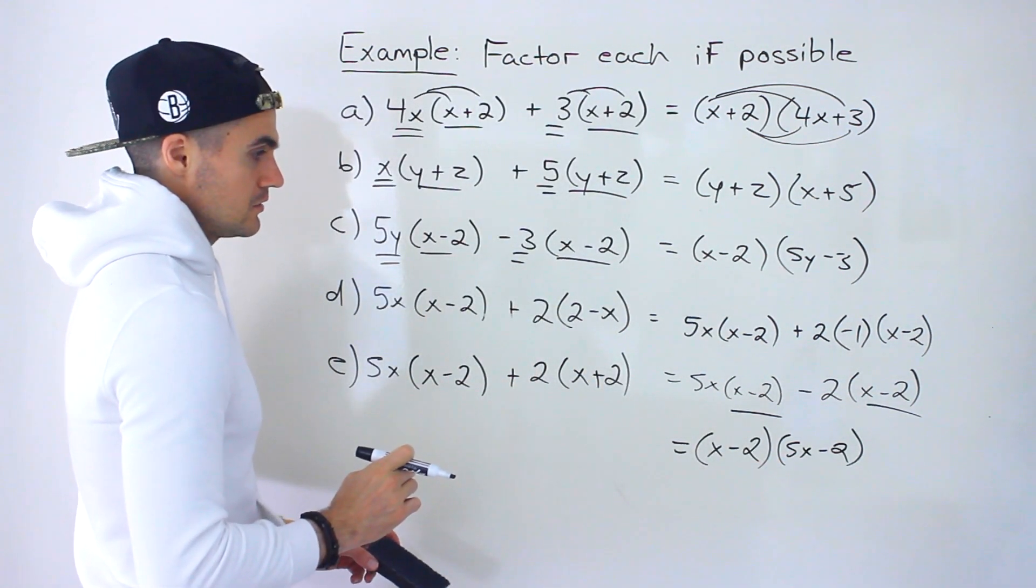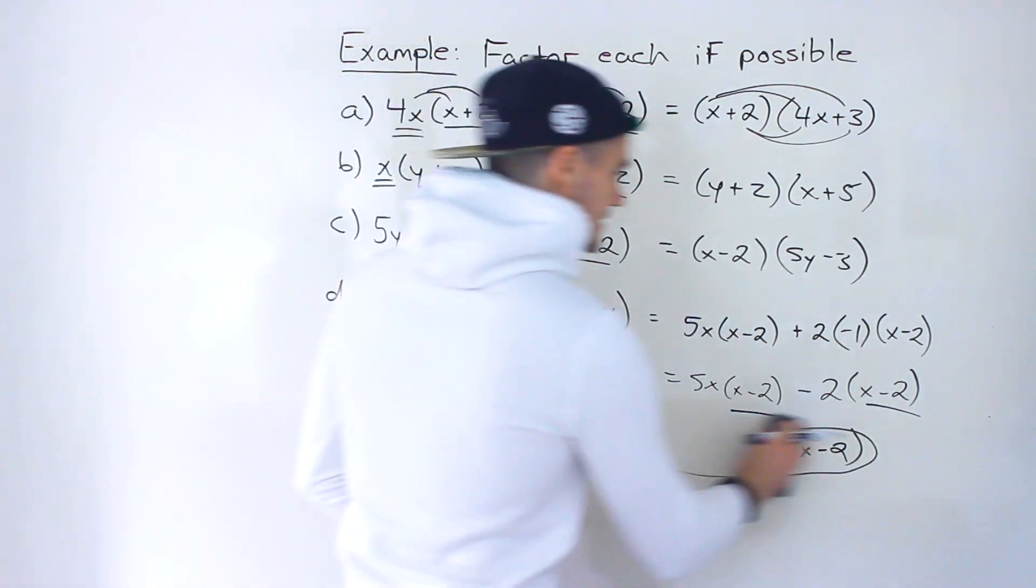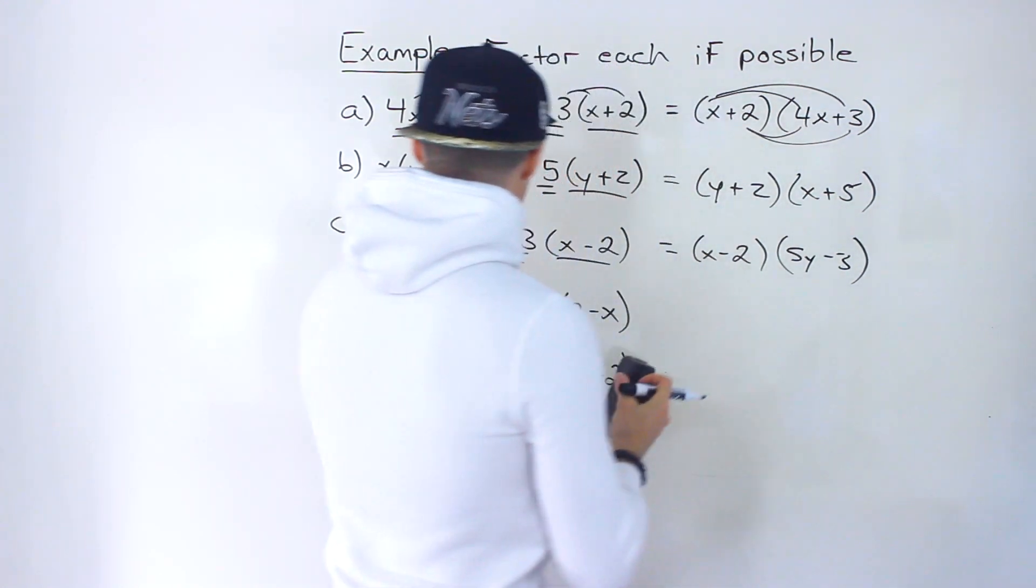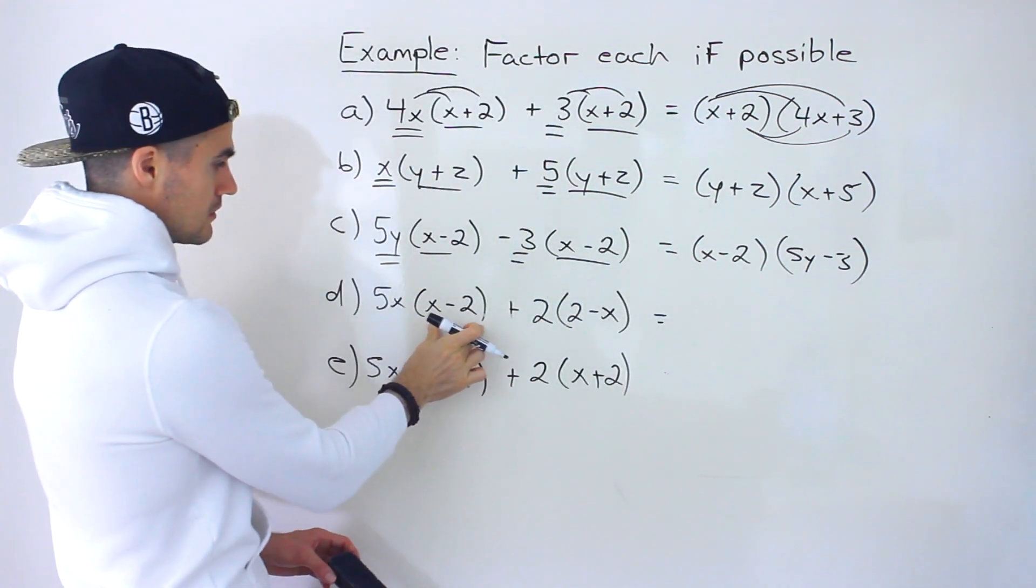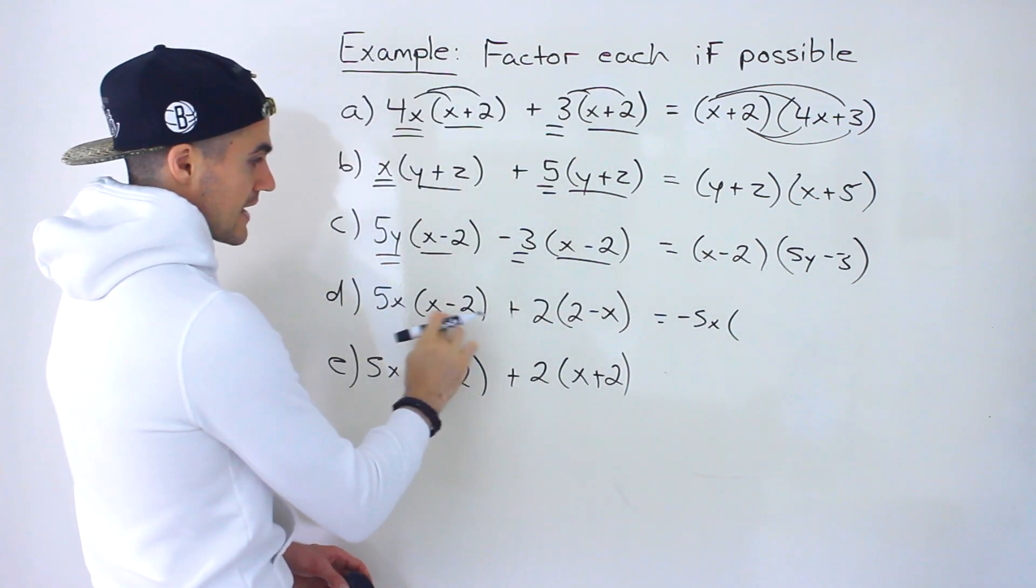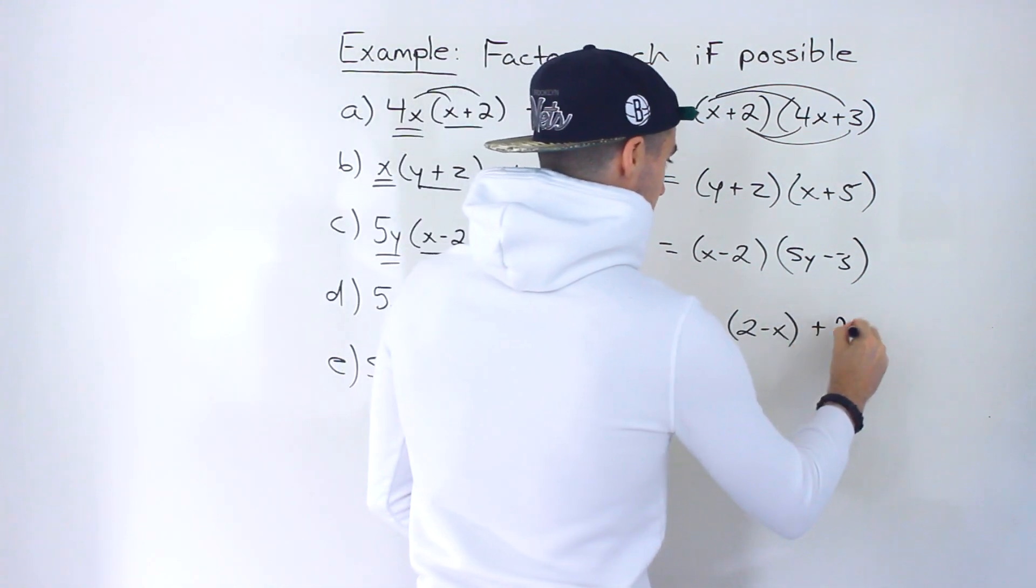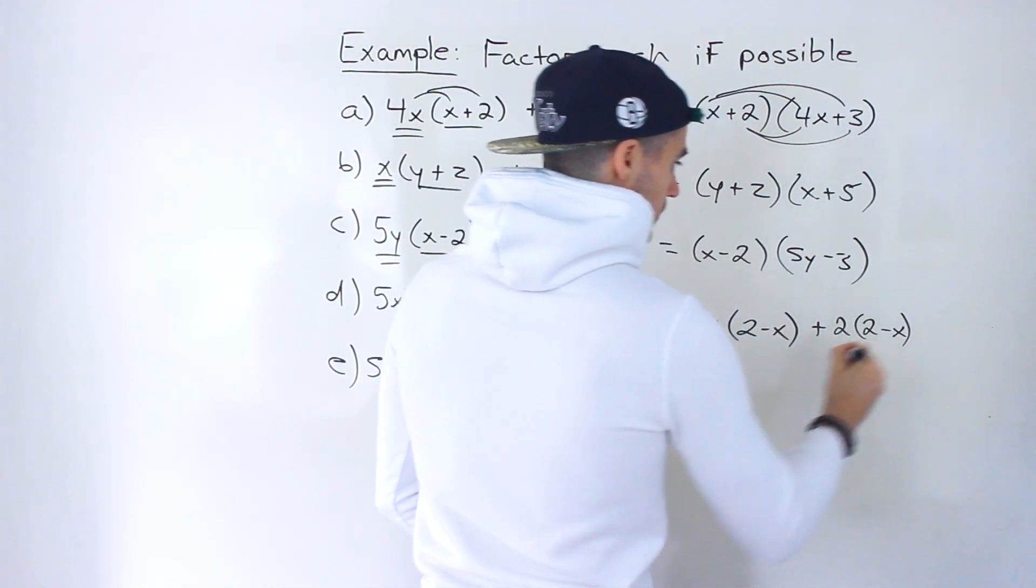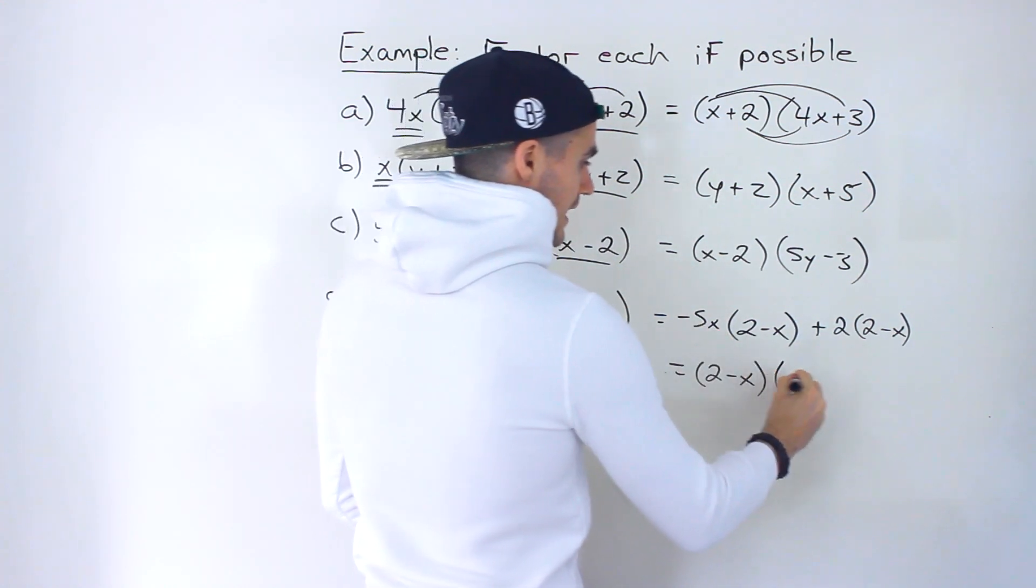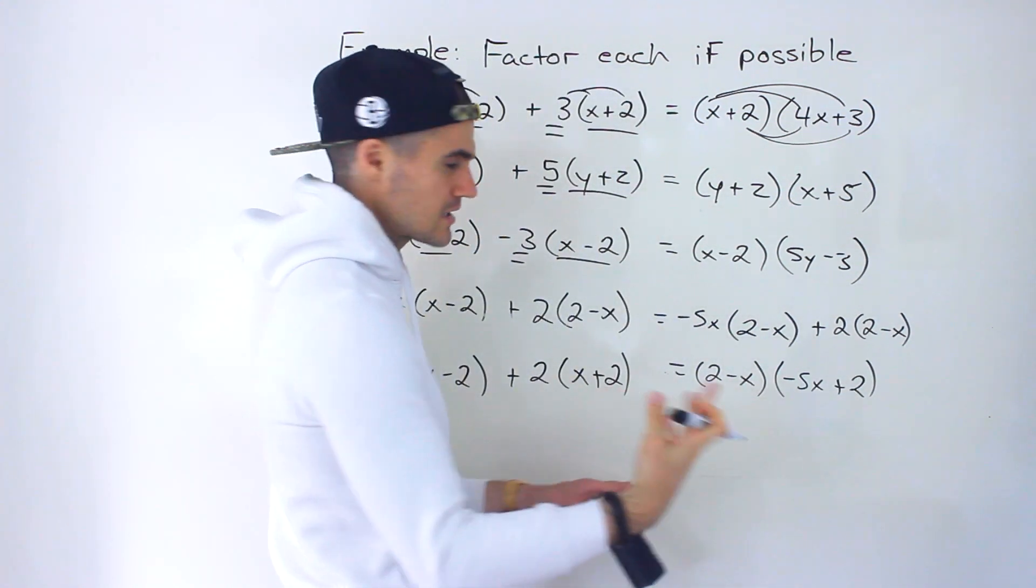Now, it's also possible, so this is the solution right there. Now, it's also possible that you could take out the negative from this one. But watch what happens with the format. It's going to be a little bit weird. If we take out a negative from here, so we put the negative 5x, and then we'd end up with, instead of x minus 2, we'd have 2 minus x. And then this would stay the same. And then we could take out a 2 minus x and we'd be left with negative 5x plus 2. But then notice you've got a negative over here. It's just a little weird of a format.